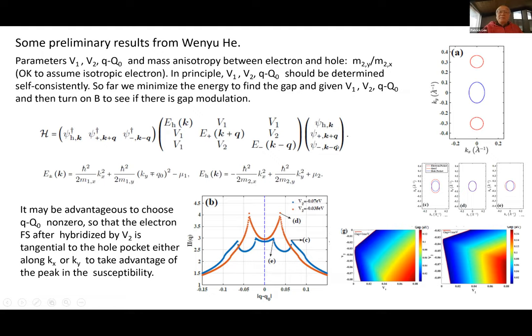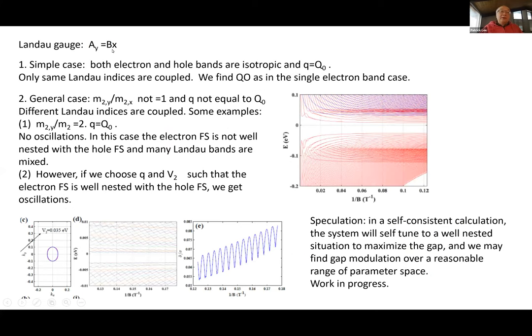Let me say quickly—this is still work in progress. The idea is we now want to treat the coupling of one hole and two electron bands shifted by q. There's matrix element V₁ which couples the electron and hole, and V₂ which couples the electron bands. It's actually a rather large phase space: V₁, V₂, and q, and these should be determined self-consistently for a given interaction model to find the gap. One thing is this q is not the q₀ because you could shift them so there's tangent—this red is tangential to the blue—then you can take advantage of these peaks in the susceptibility.